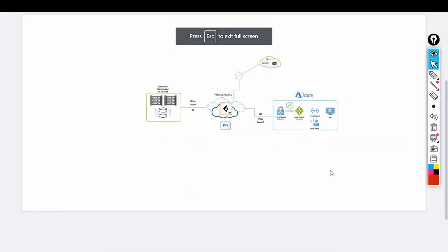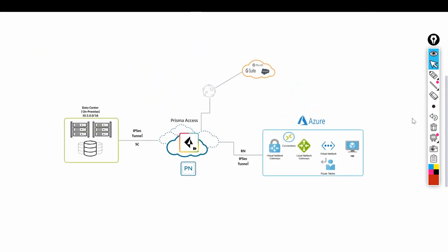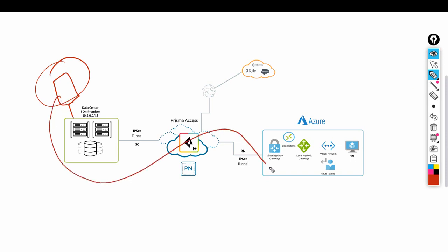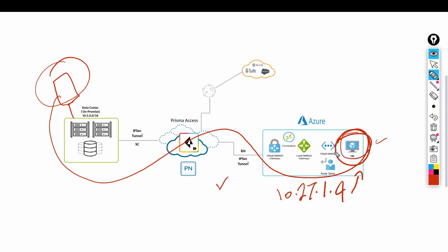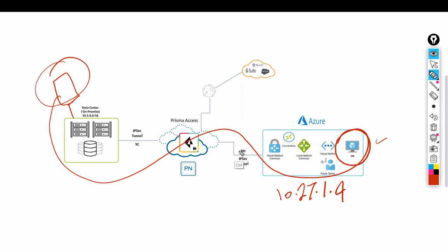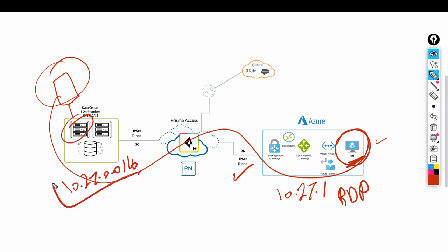I'll go back to Prisma Access. I have one server here and from this server I'll try to RDP to the new VM through the VPN - IP 10.27.1.4. Once RDP is done I can verify internet access from this computer, confirming the tunnel is working. Sender and receive will work perfectly. Let's try that. I'll also add network 10.27.0.0/16 to my route table in the firewall.